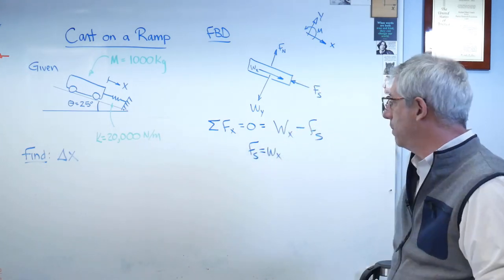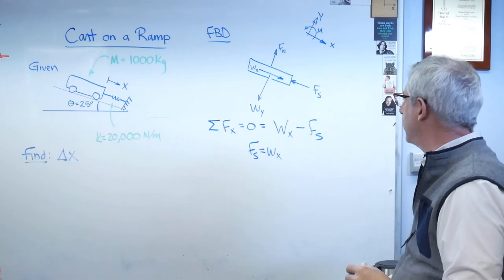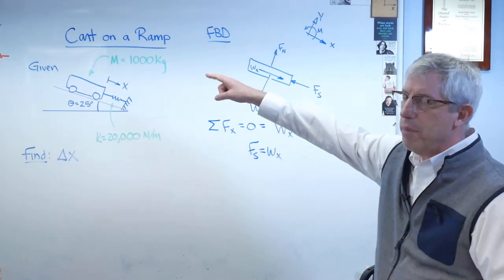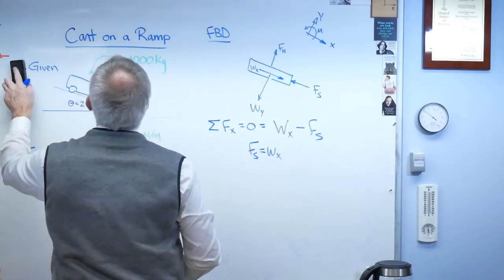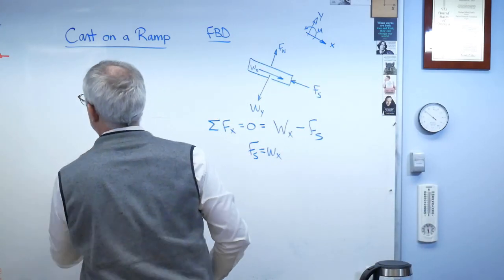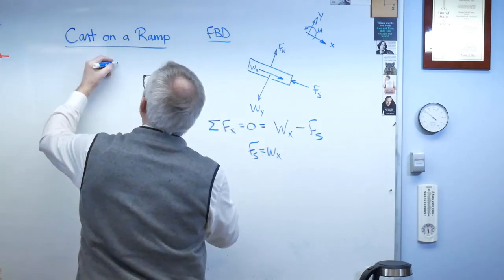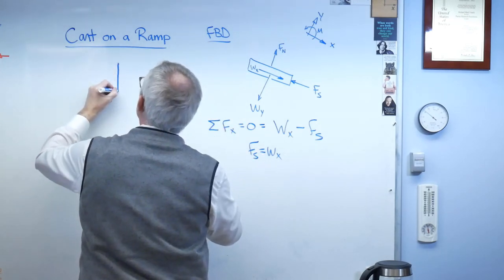So the only thing I need to know now is, well, what's w x? We're going to draw a force triangle. Let's draw weight down because gravity always works towards the center of the earth. So gravity is always down.